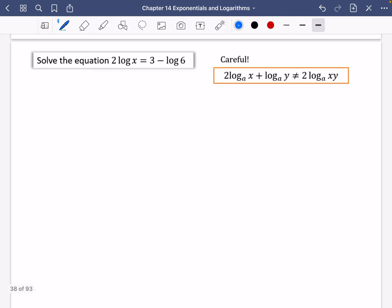OK, we're going to try this one. So I've got a little careful thing here. And this is what I talked about before, that you can't combine them when there's a 2 outside the front. You can only combine them if it is like this, if you've just got log and a log. So let's think about this one. First of all, we need to get them onto one side. So I'm going to have 2 log x plus log 6 equals 3.